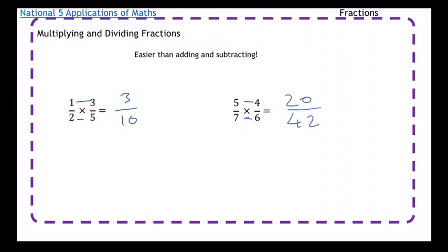This time we can simplify. There's a number that can divide them both. So 20 and 42 I can divide them both by 2, which is going to give me 10 over 21. And there's no number that's going to work for that. So that's my answer there.